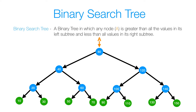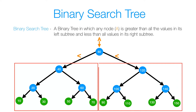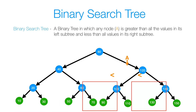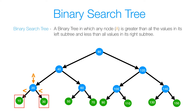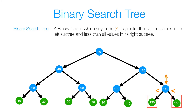A binary search tree is a binary tree in which any node A is greater than all the values in its left subtree, and less than all the values in its right subtree. That applies to every single node in our binary search tree, where all the values to the left of that node are smaller, and all the values to the right are larger.